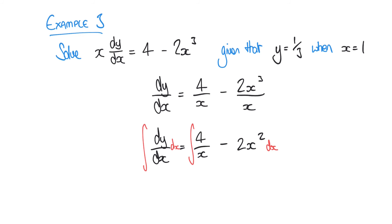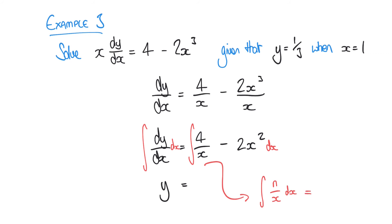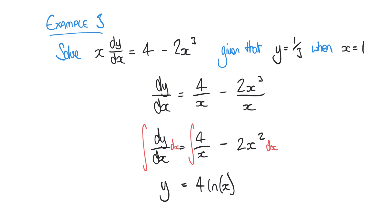Again we'll integrate both sides. Integrating the left hand side gives y. On the right hand side we have two terms to integrate with respect to x. A useful note: when we integrate n/x with respect to x we get n times the natural logarithm of x. Applying that rule here, 4/x integrates to 4 ln(x), and minus 2x² integrates to minus 2x³/3. Adding the constant c, this is our general solution.